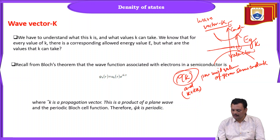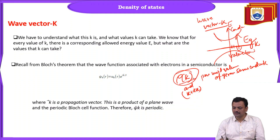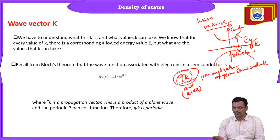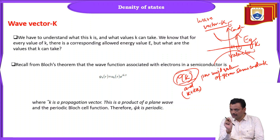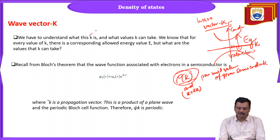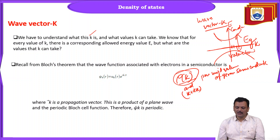The density of states ρ(k) is the number of available states on the k-axis between k and k+dk per unit volume of the given semiconductor. For each k point there is a corresponding allowed energy E value — for each k₁ there is E₁, k₂ there is E₂ — in our E-K diagram. But what are the values that k can take? In quantum mechanics, all values should be discrete in nature.